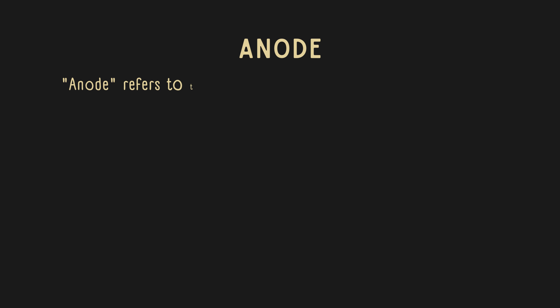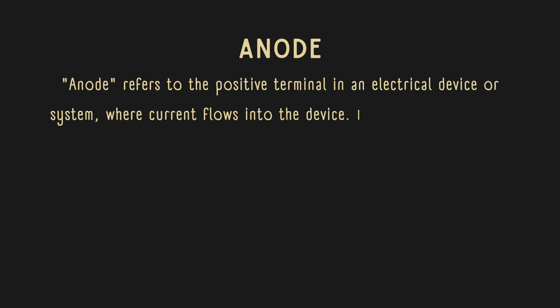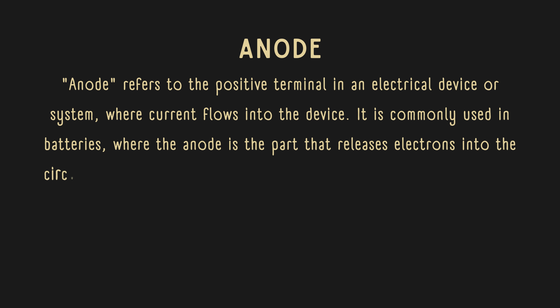Anode refers to the positive terminal in an electrical device or system, where current flows into the device. It is commonly used in batteries, where the anode is the part that releases electrons into the circuit.